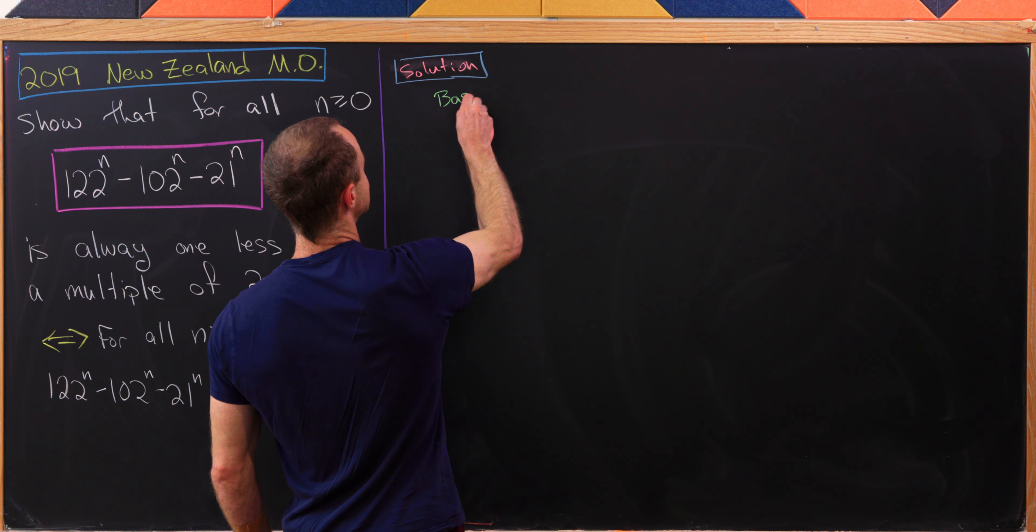And then, of course, after an induction hypothesis, you make the induction step. And for the induction step, you'll generally consider the k plus first case of this setup. So in other words, I want to consider the expression 122^(k+1) - 102^(k+1) - 21^(k+1). But now I'll factor out one copy of 122, one copy of 102, and one copy of 21. So that'll leave me with 122 times 122^k - 102 times 102^k - 21 times 21^k.